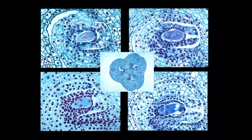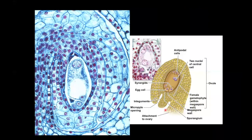Looking at the female gametophyte — here's a cross-section through the ovary of a lily. This is a monocot, so we've got three different compartments with separate ovules. Looking inside these ovules, you can see the megaspore undergoing cell divisions, ultimately giving us four cells that divide further, forming the female gametophyte. This picture shows an actual micrograph of a female gametophyte inside the ovule and a labeled diagram to help you understand exactly what you're looking at.